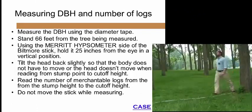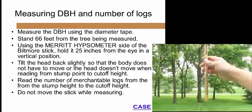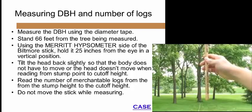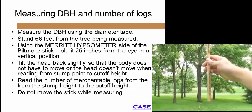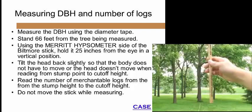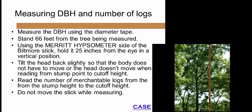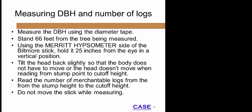The Biltmore stick has been calibrated so that if you stand 66 feet from the tree and hold the stick 25 inches from your eye in a vertical position, you can read the number of merchantable logs using the Merritt Hypsometer side of the stick. The line of sight crosses the stick at the number on the Merritt Hypsometer scale, indicating the quantity of 16-foot logs that may be cut from the tree. For a very tall tree, walk an additional 33 feet away. It is important not to move the stick when taking a measurement, and tilt your head back slightly when reading from stump point to cutoff height.